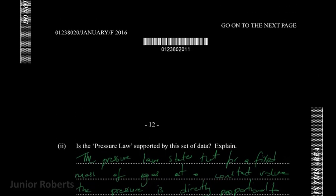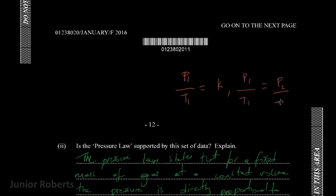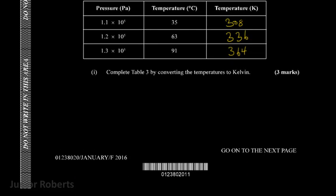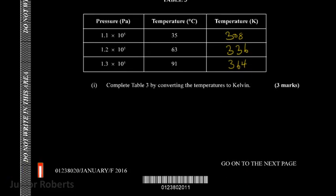The pressure law also states that P1 over T1 is equal to a constant, and further that P1 over T1 equals P2 over T2. We can actually use two sets of data from the table to test this principle numerically.